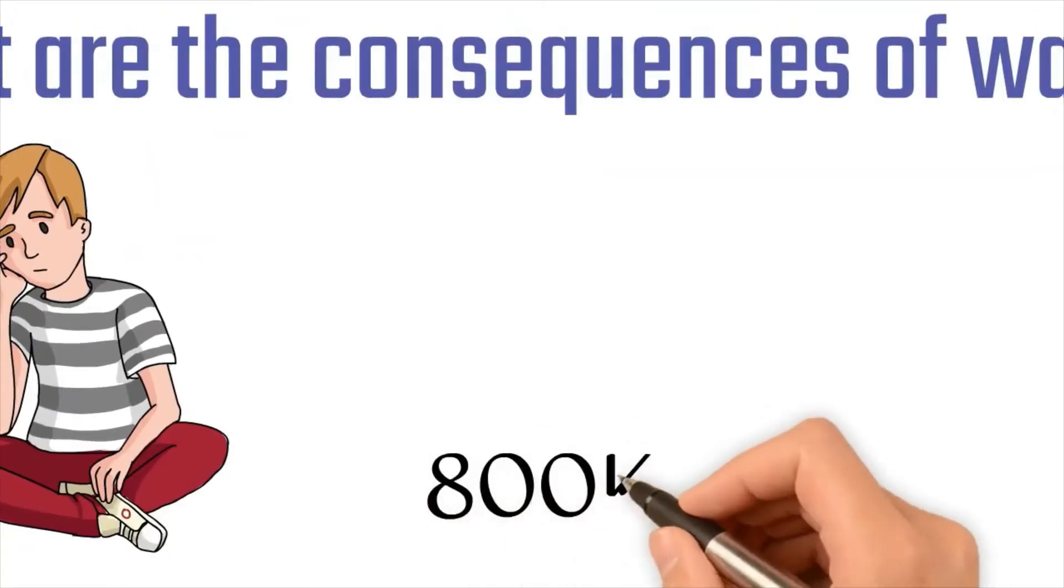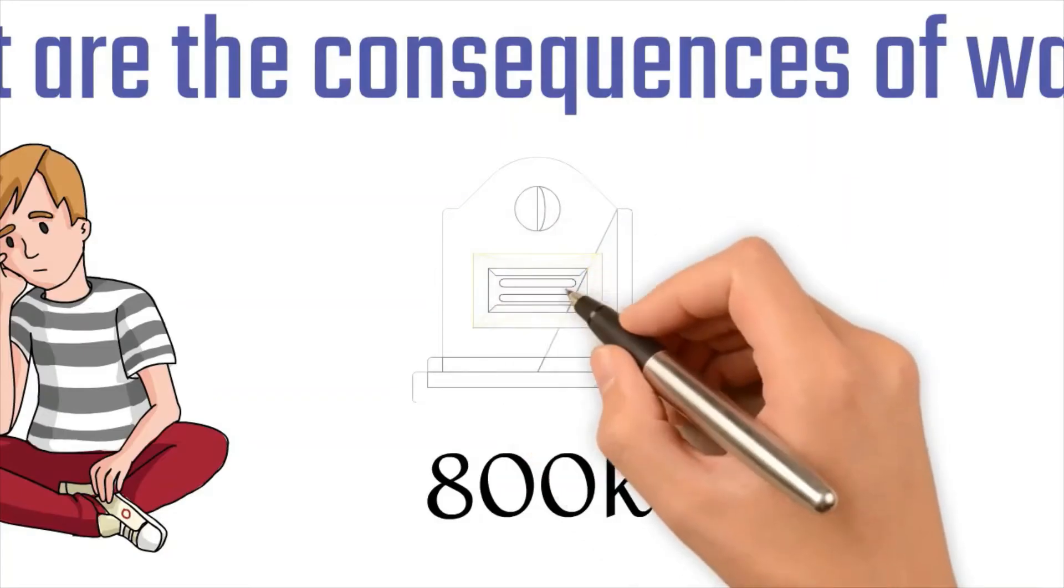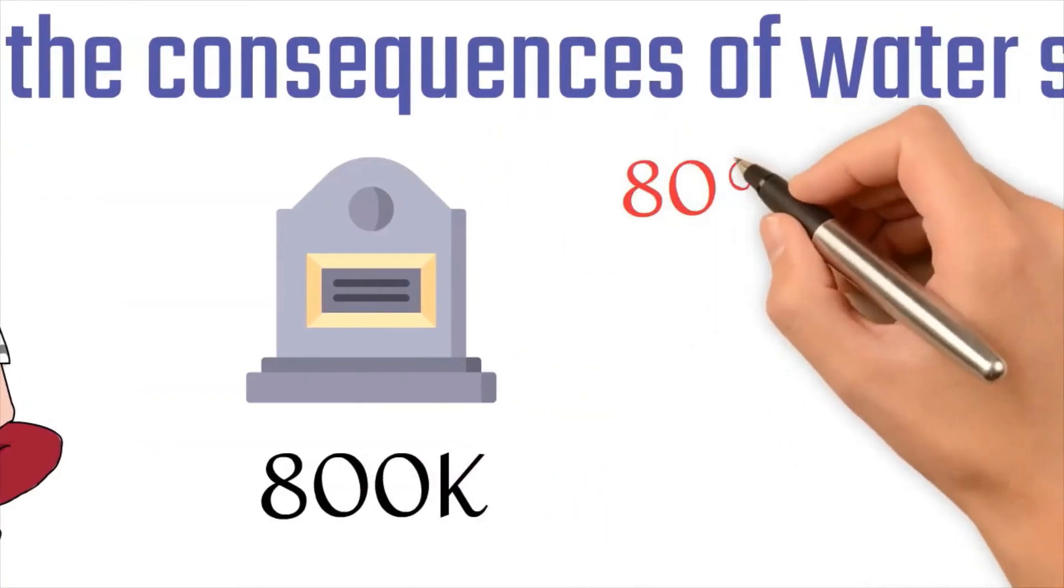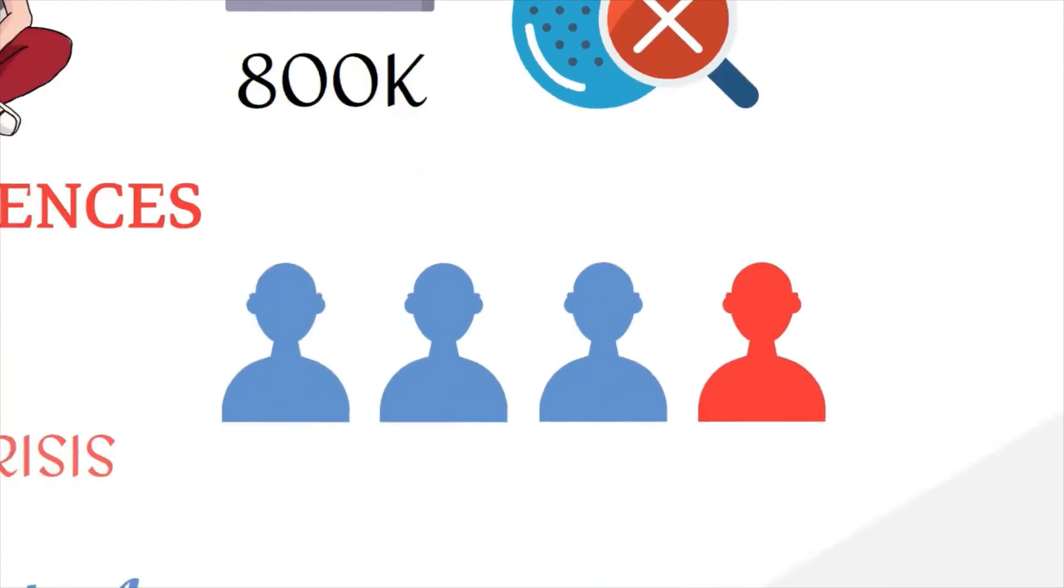Every year, more than 800,000 people die from diarrhea caused by consuming unsafe drinking water or insufficient sanitation practices. Eighty percent of the illnesses in developing countries result from unhealthy water, and one out of four deaths of children under the age of five are the result of water-related illnesses.